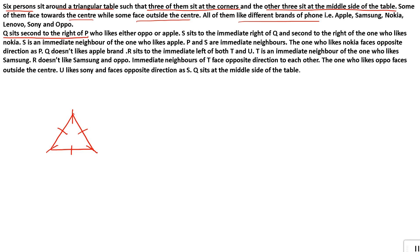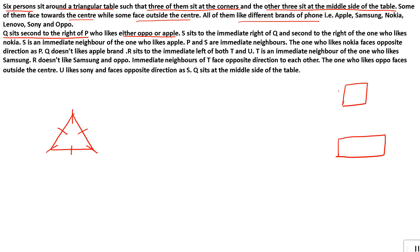Q sits second to the right of P, who likes either OPPO or Apple. Now, when we get a square-based or rectangular-based puzzle, we take two possibilities from the start. But here we have one more information — whether corners face inside or outside the center, and similarly for the middle sides. So there could be four possibilities, but we will use a shortcut and start with two possibilities.